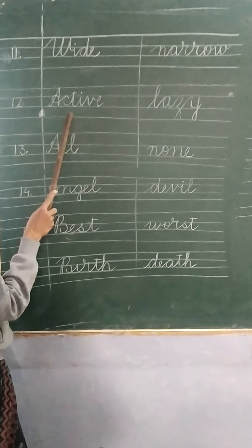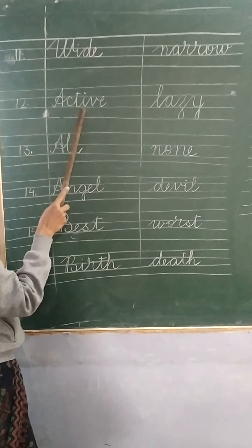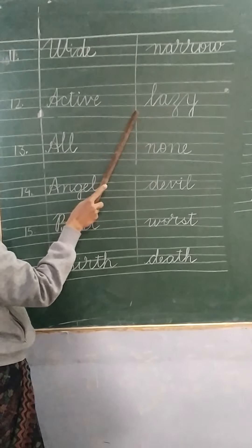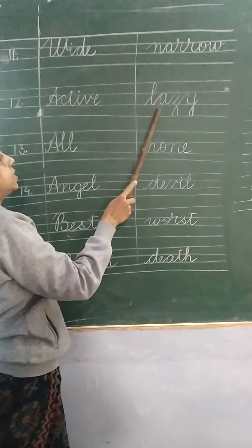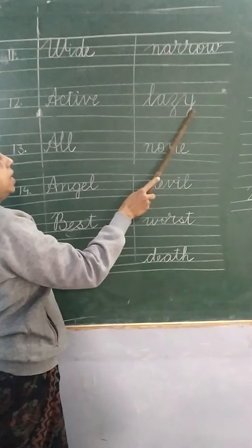Number 12. Active. A-C-T-I-V-E active. And the opposite of active is lazy. L-A-Z-Y lazy.